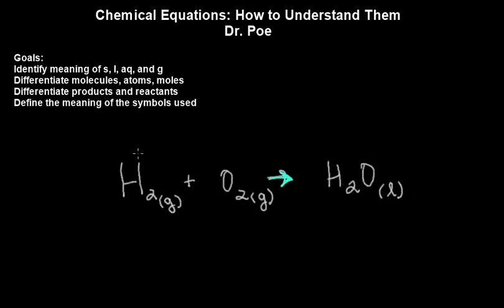So in this example, we've got two things combining to create one thing, but it could be opposite. It could be one thing breaking apart to form multiple things. So don't let that fool you.